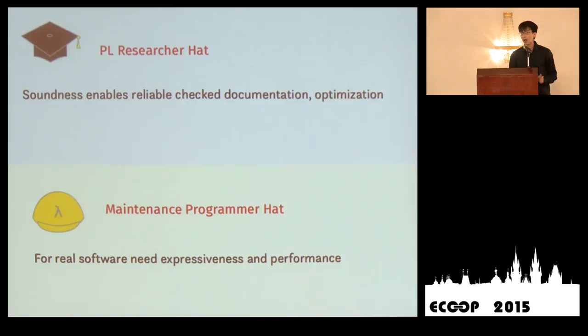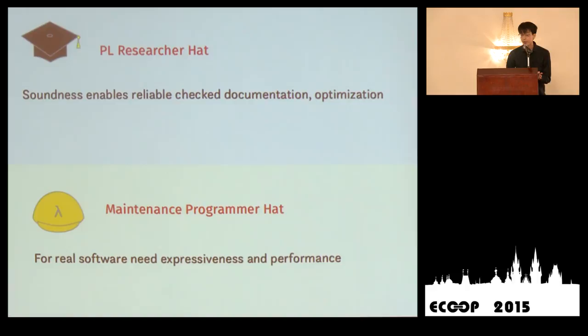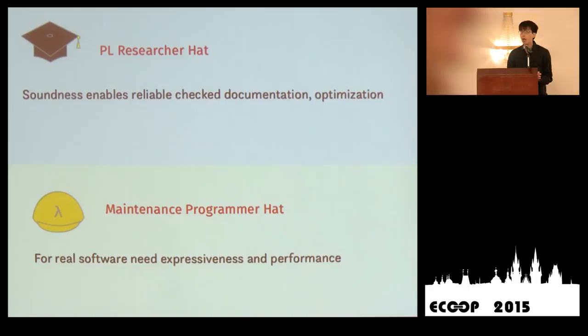There are multiple ways we can view this thesis. As PL researchers here at ECOOP, many of us value sound gradual type systems, because soundness enables things like reliable check documentation, compiler optimizations, and other benefits. But the purpose of gradual typing is for software maintenance. Putting on our maintenance programmer hat, we want a practical gradual type system — one that is both expressive, supporting the programming idioms used in real programs, and performant, in the sense that it shouldn't ruin performance when we add type annotations.